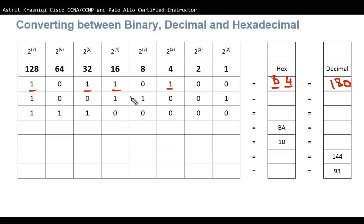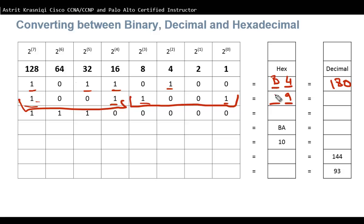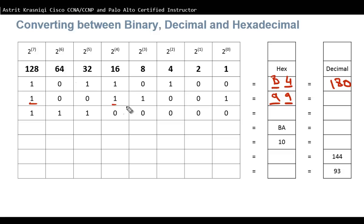For the next binary number, I'll again split it into two groups of four. The right group: 8 plus 1 is 9, so that's 9. The left group: 8 plus 1 is also 9. So the hexadecimal value is 99. To convert to decimal: 128 plus 16 is 144, plus 8 is 152, plus 1 is 153. That's 153 in decimal.